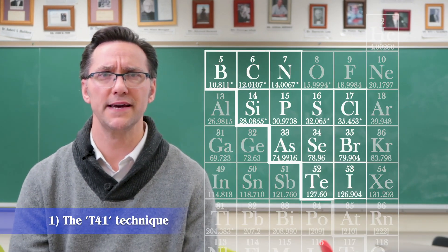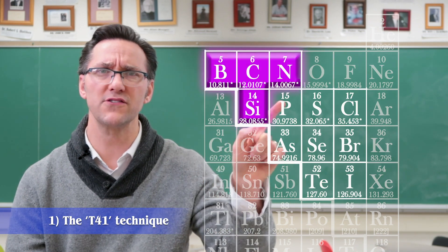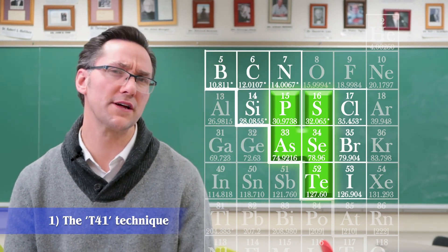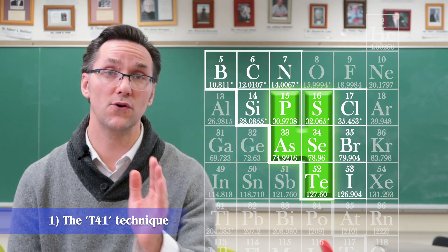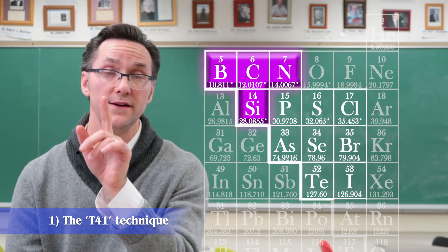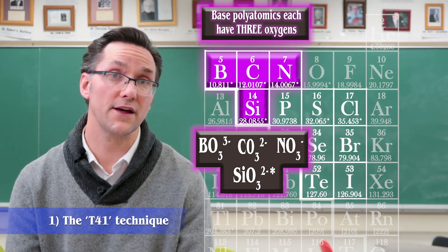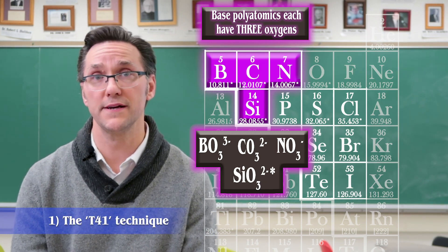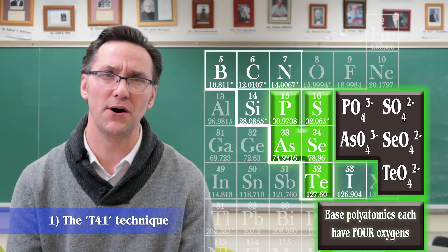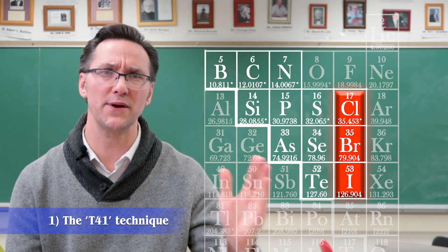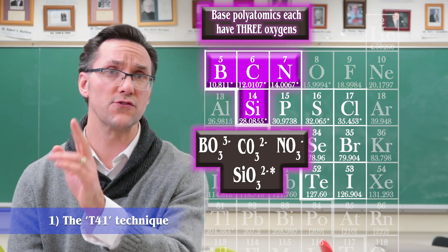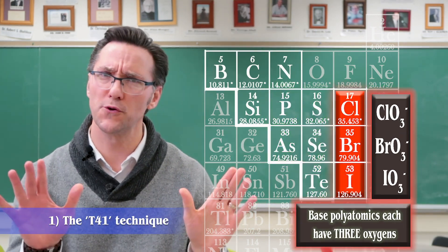On your periodic table, starting with four, you're going to make a small T. Right underneath that T, you're going to snuggle on a four. So T4, and then right next to it, those halogens are going to make a one — forming T4I. All the elements in the T contain three oxygens in their common polyatomic. All the elements in the four have four oxygens, and over in that I, they all contain three oxygens again. So: three, four, three — super easy.